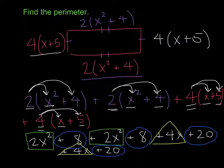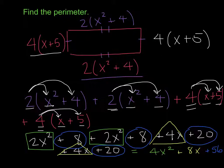Adding up the x squared terms: 2x squared plus 2x squared is 4x squared. Adding up the x terms: 4x plus 4x is 8x. Adding up the constants: 20 plus 20 is 40, plus 8 is 48, plus another 8 is 56. That leaves me with a perimeter of 4x squared plus 8x plus 56.